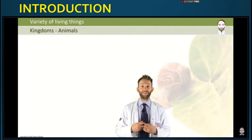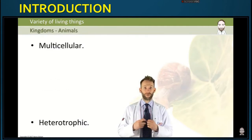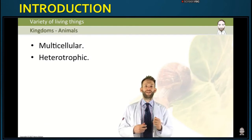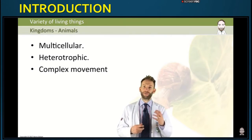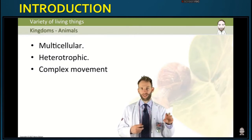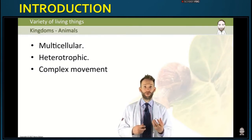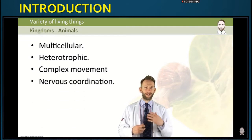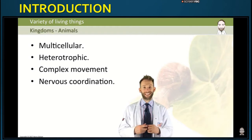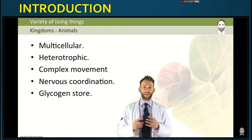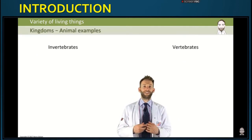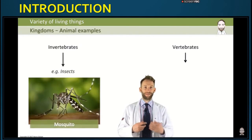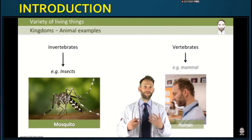Animals are also multicellular. They get their nutrition from feeding on other organisms — what we call heterotrophic. They are capable of complex movement from one location to another, and they have nervous coordination. They don't have a cell wall or chloroplasts, and do not photosynthesize. They store their carbohydrate as glycogen. You can further divide animals into invertebrates and vertebrates — whether they have backbones or not. An example of an invertebrate might be a mosquito, and a vertebrate might be a human, like a mammal.